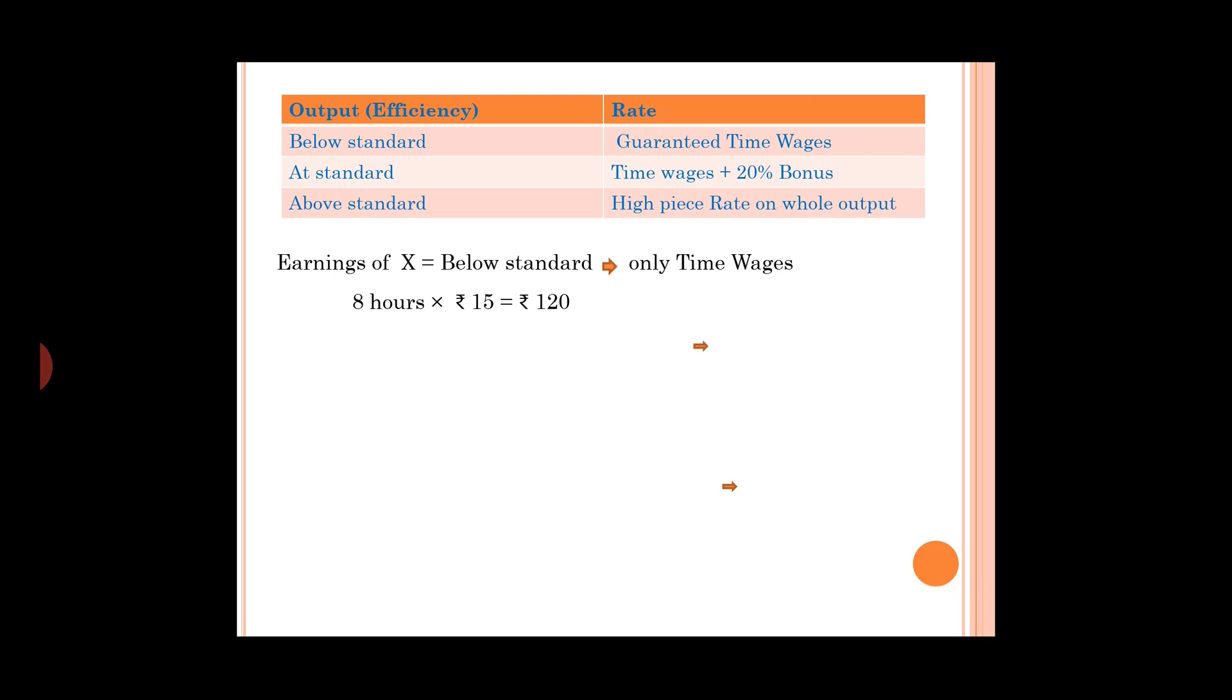Earnings of Y: performance at standard, so 8 hours times 15 plus 20% of 8 hours times 15 equals 144.